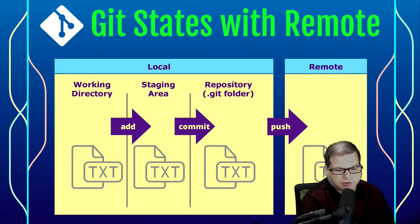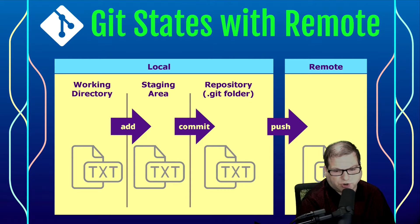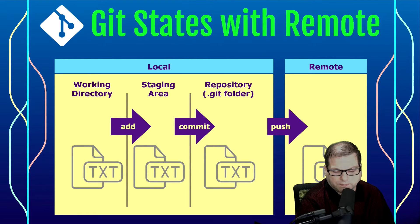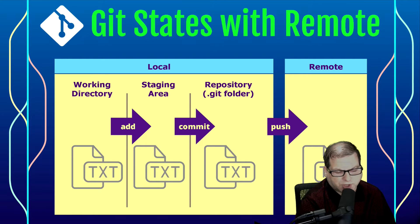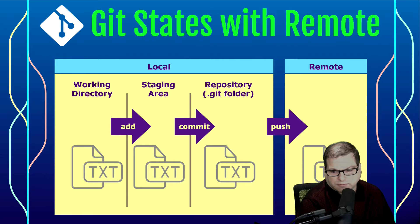When I combine everything together, this is what the entire workflow looks like. We start on our working directory, add our changes to the staging area, commit our changes — we can rinse and repeat this process over and over again — and then at some point, we're going to push all of our changes up to the remote repository. A remote repository is simply a repository that's not on your local system. That could be a Git repository set up at a team location, that could be internal, or it could be on a remote hosting service like GitHub, GitLab, or Bitbucket. Those are the three most important ones right now.